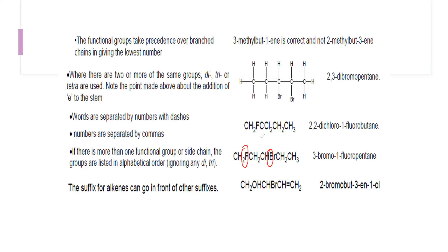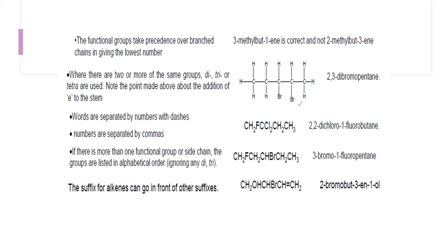The suffix for alkene can go in front of other suffixes. This compound has three functional groups: OH, a double bond, and bromine. At the second position we have bromine (2-bromo); there are four carbon atoms (bute); the double bond is at position one (3-en); and the OH gives 1-ol. The question is: how do we determine the priority order for functional groups?